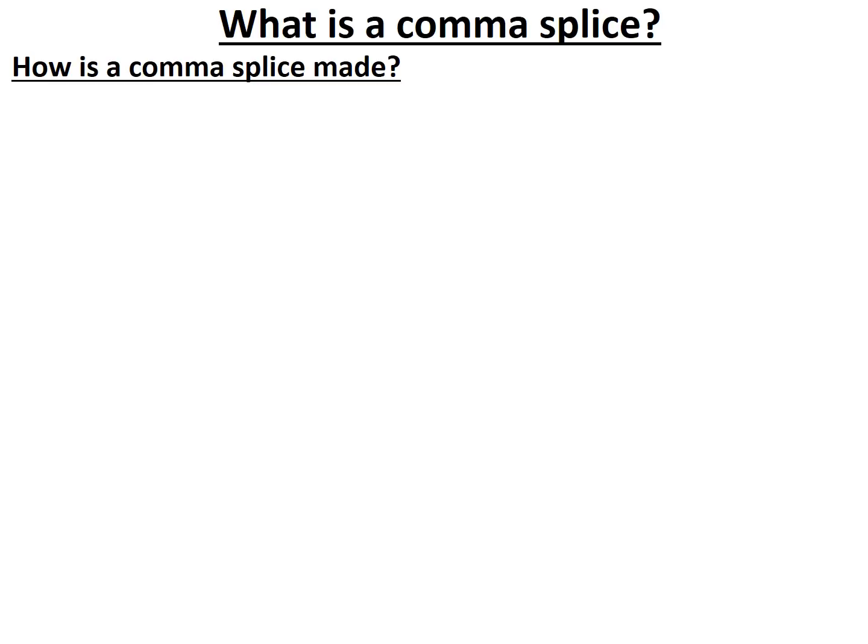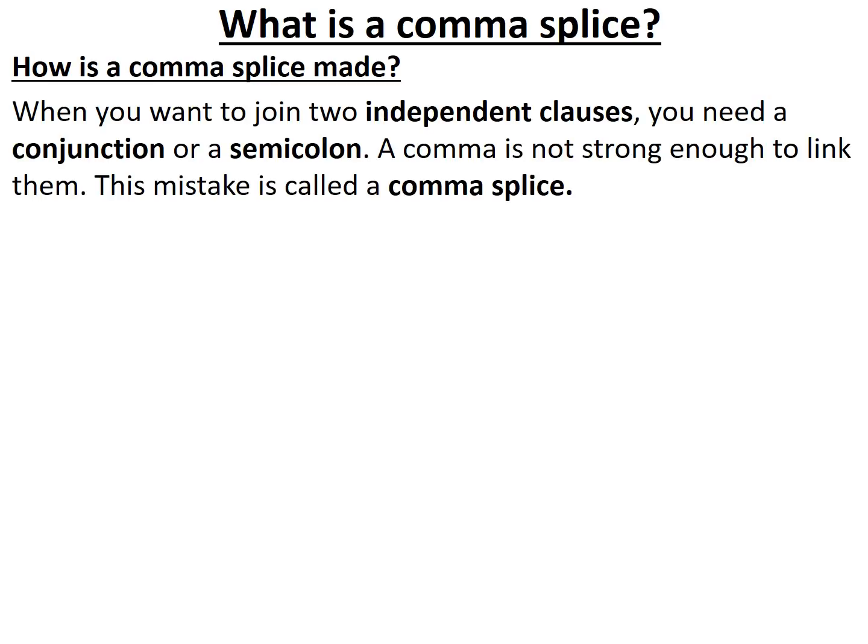That's because a comma is not strong enough to link two independent clauses. If we use a comma instead of a semicolon or a conjunction, this forms a comma splice.